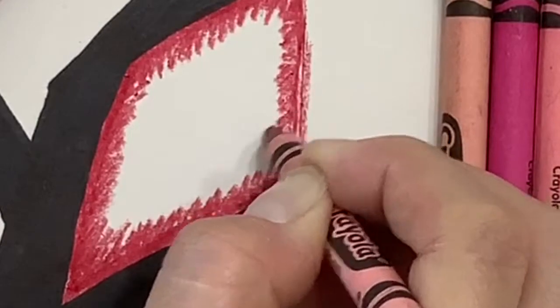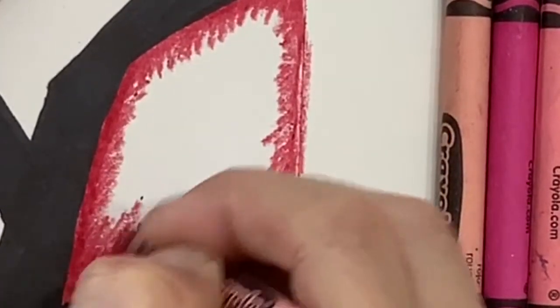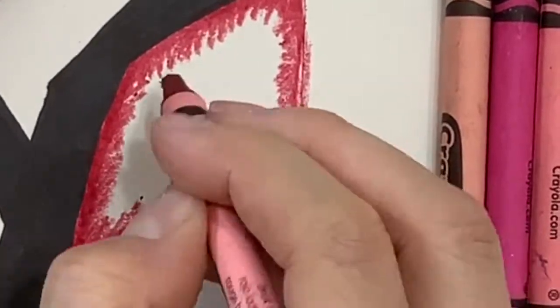Whichever option you choose make sure to have a placemat or scrap sheet of paper underneath to protect the surface that you're working on.